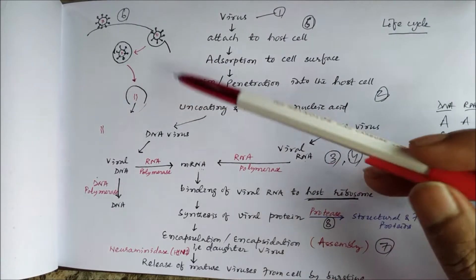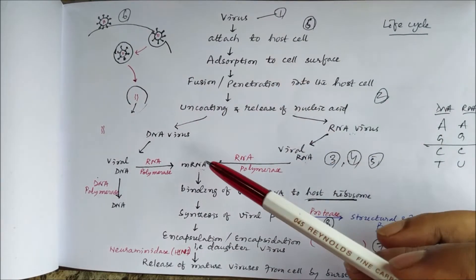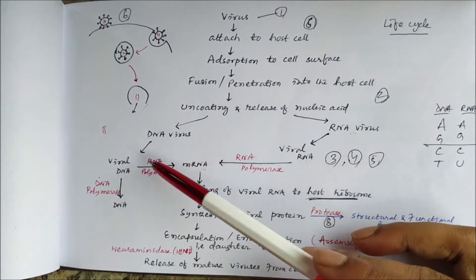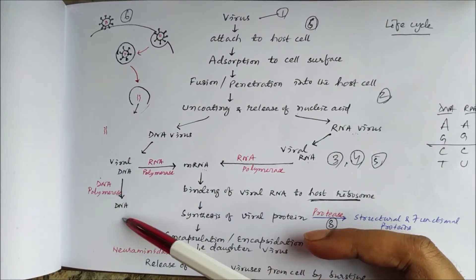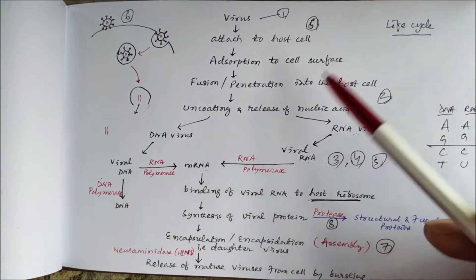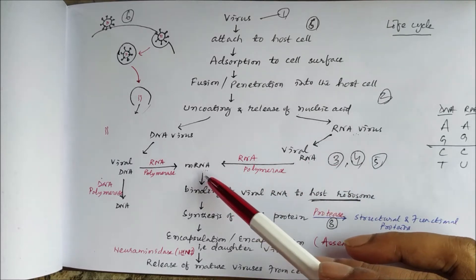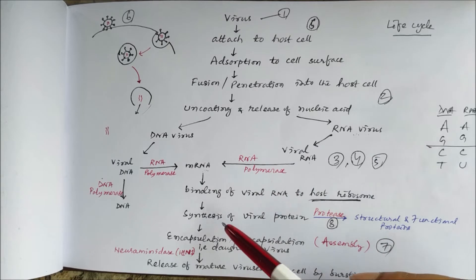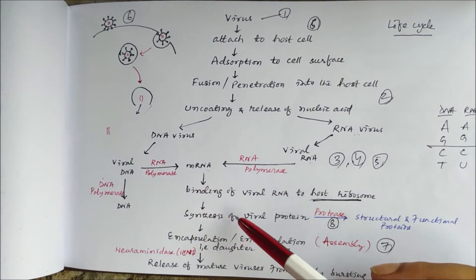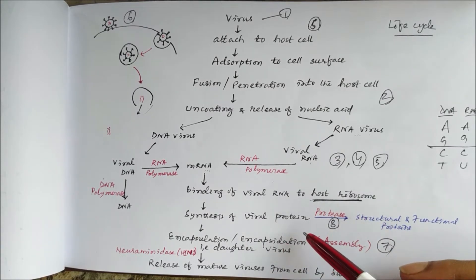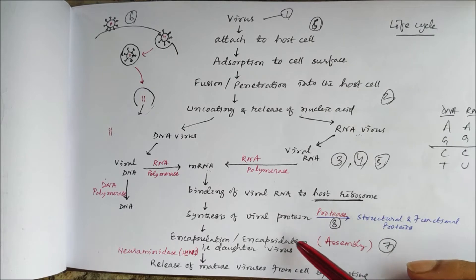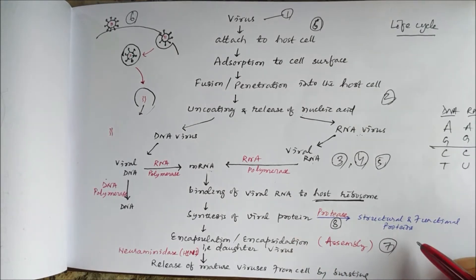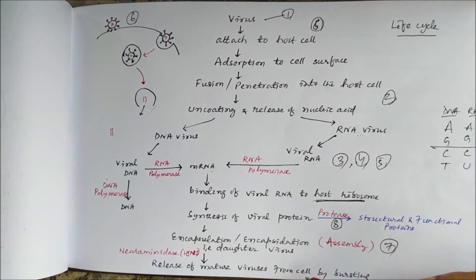After penetration, there is fusion into the host cell followed by uncoating, so that the nucleic acid is released. DNA viruses release DNA; RNA viruses release RNA. More DNA can be produced from DNA, and DNA produces messenger RNA. Similarly, RNA produces more RNA via RNA polymerase. This viral messenger RNA binds to the host ribosome to synthesize viral proteins. In some viruses like hepatitis and HIV, protease converts these viral proteins into structural and functional proteins.